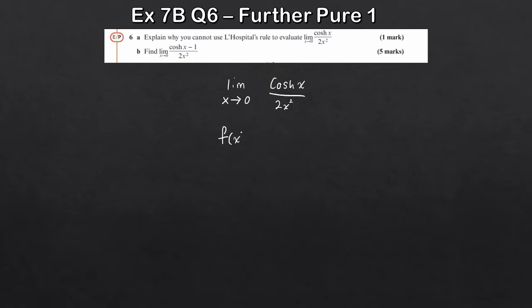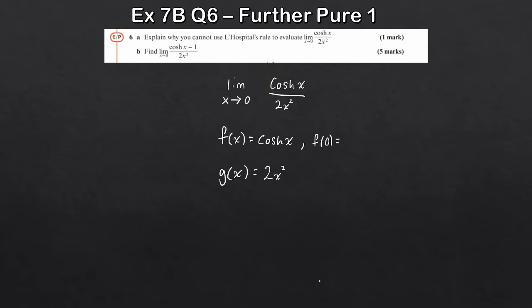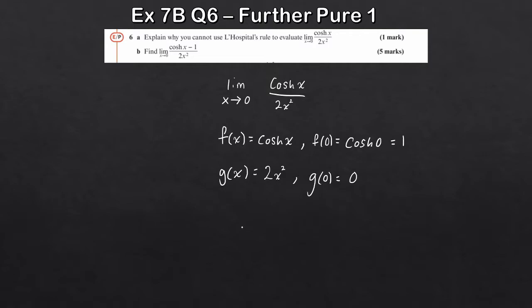We consider the limit by substituting zero into the numerator and denominator separately. Remember, with L'Hôpital's rule we treat this as a quotient of two functions: f(x) = cosh(x) and g(x) = 2x². So f(0) = cosh(0) = 1, and g(0) = 2(0)² = 0. This gives us 1 over 0, which is not indeterminate.